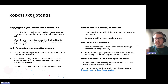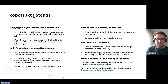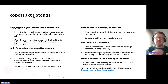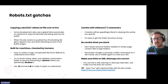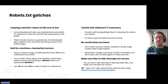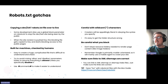Another tip is to use comments. If you use hashtags in your robots.txt file, you can leave a line with an explanation as to what the purpose of the lines beneath it are — adding that human touch so that if someone else comes to look at the robots.txt file, they understand the reasoning behind those lines.